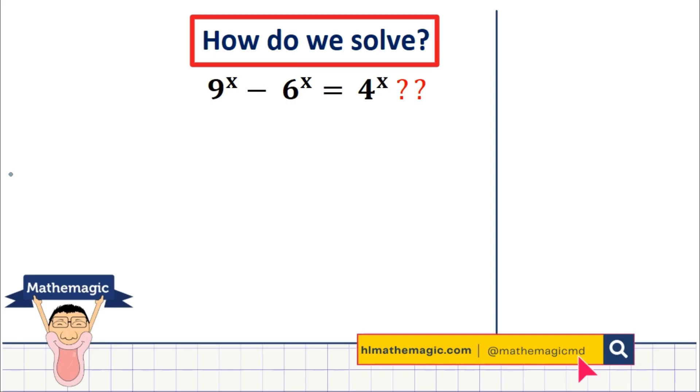Our first step here is going to be to divide both sides by 4 to the power x. So we can say that this is 9 to the power x over 4 to the power x minus 6 to the power x divided by 4 to the power x. And 4 to the power x divided by itself is going to be 1. So moving the 4 to the x to the other side, times becomes divide, and so we're dividing the left hand side by 4 to the power x.